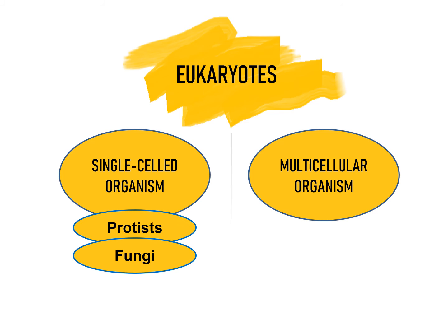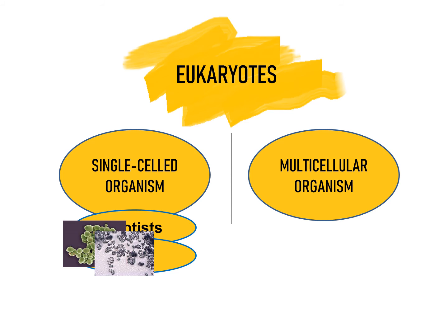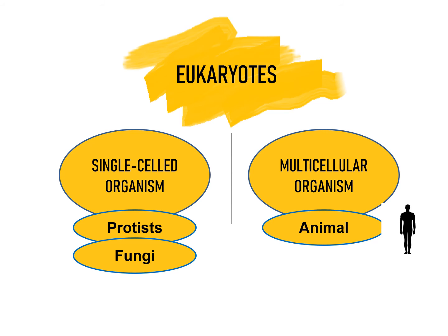Examples of protists are amoeba, Euglena, and paramecium — these are single-celled organisms. The second category of single-celled organisms are fungi; examples are yeast, molds, and smuts. These are also single-celled organisms.